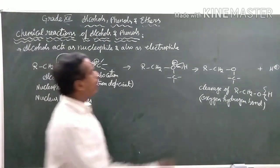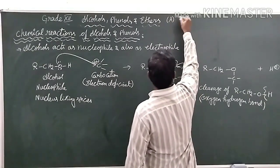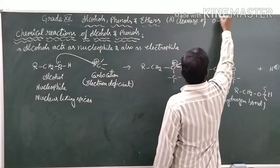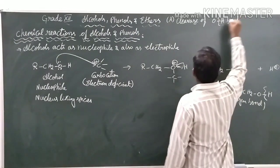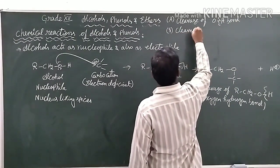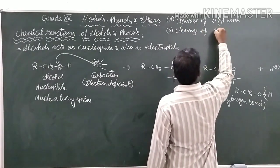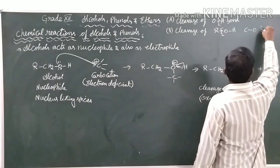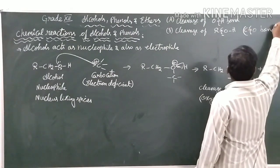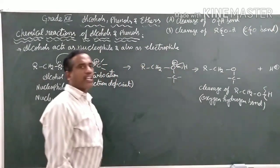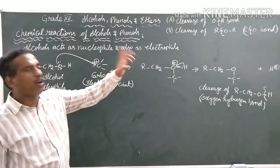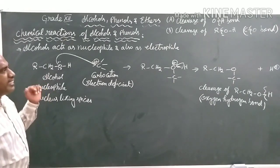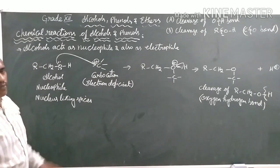As electrons are lost, oxygen bears a positive charge. To neutralize this positive charge, it withdraws electrons back from hydrogen, because hydrogen is less electronegative than carbon — hence the more electronegative oxygen draws electrons from the least electronegative element hydrogen, removing it in the form of H⁺. In this case we observe a cleavage of the O-H bond. Whenever alcohol acts as a nucleophile, there is a cleavage of the oxygen-hydrogen bond.